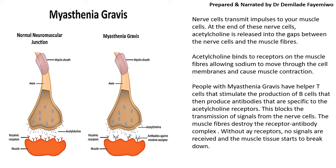The way the transmission works — I'll explain it using this image here on the left — is that the nerve cell sends a message, and that message is transmitted through what we call a neurotransmitter. The neurotransmitter is acetylcholine. Acetylcholine will go and bind to receptors on the muscle cell, and as a result, take the message from the nerve cell to the muscle cell. The message is carried in vesicles that contain acetylcholine, which is then released into the cleft between the nerve cell and the muscle cell. Acetylcholine will then bind to the receptors on the muscle cell, and as a result, the muscle cell gets the message and responds to whatever the impulse is.